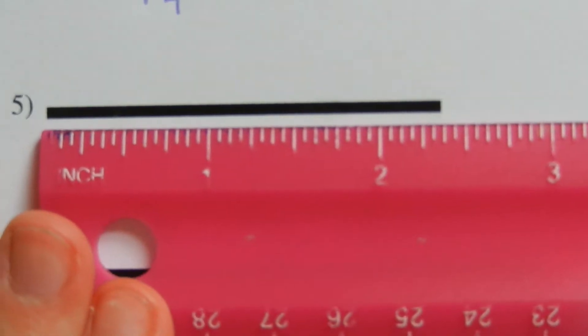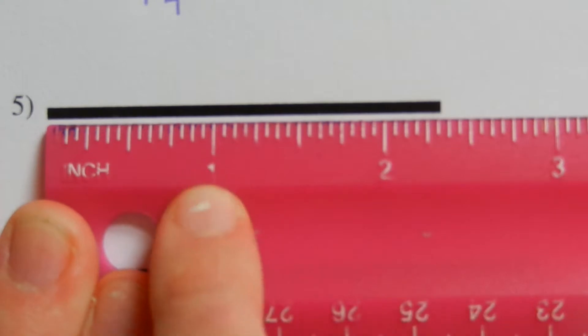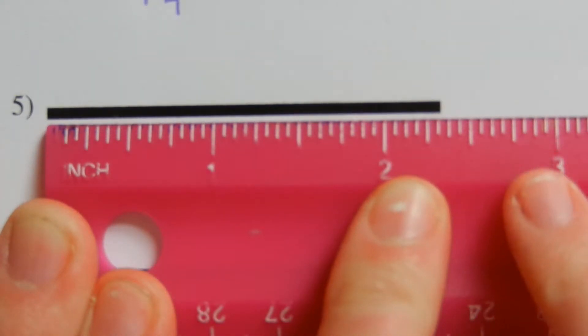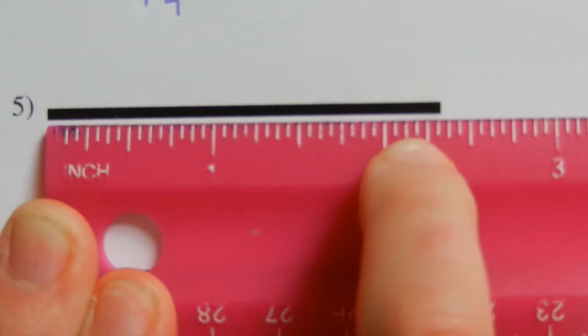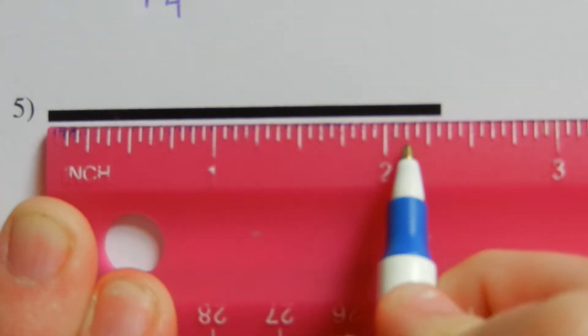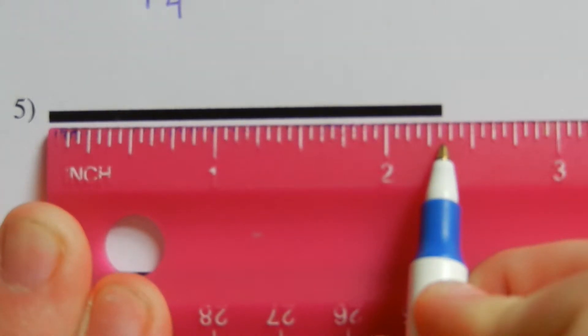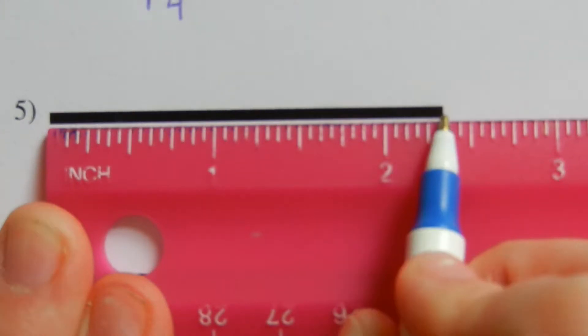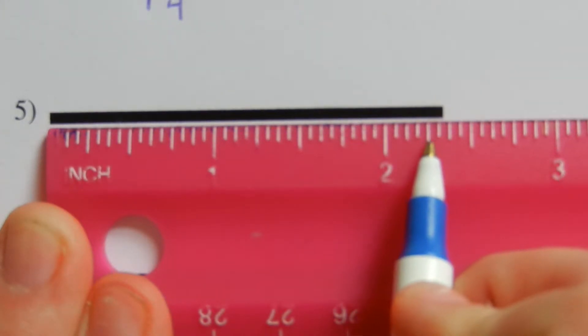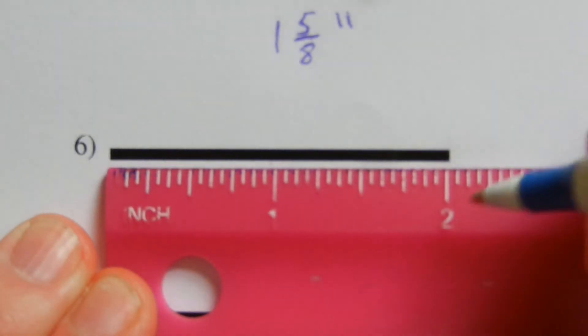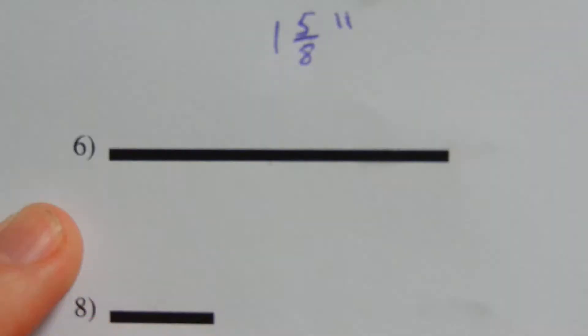Next let's move on to number five. Lining the ruler up with the edge, here's one inch, here's two inches, but it doesn't go all the way to three inches. Starting at the two: one eighth, two eighths, three — so number five is approximately two and three eighths, because it is closest to the three eighths mark, not the two eighths mark. So two and three eighths for number five.